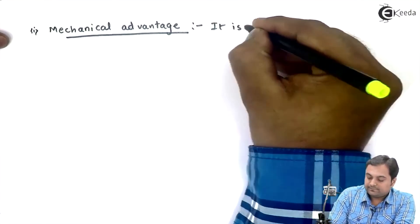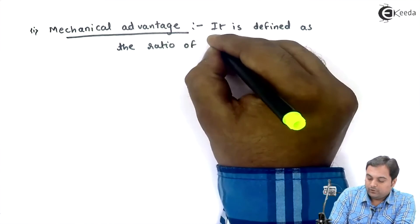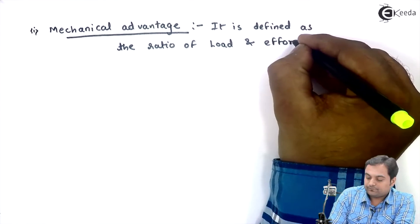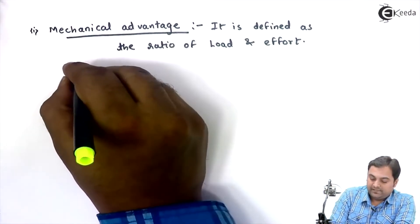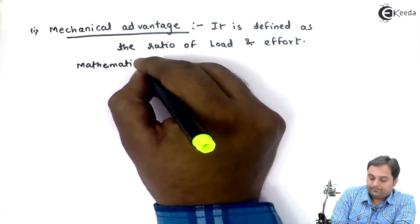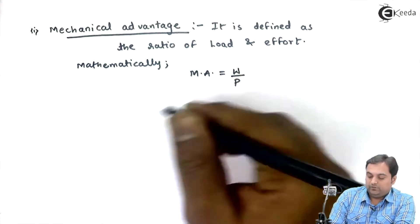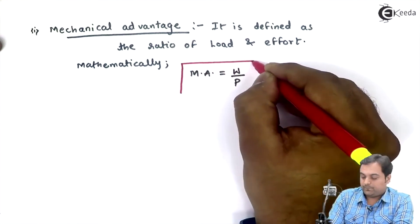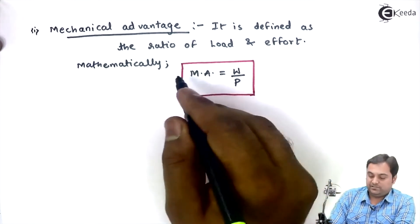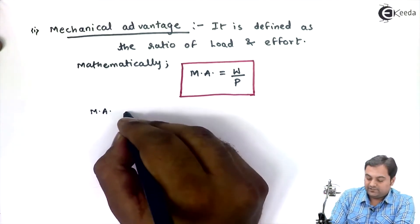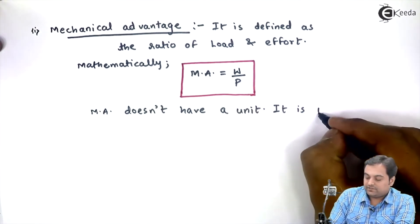Mechanical advantage is defined as the ratio of load and effort. Mathematically, the formula is given by MA — mechanical advantage, denoted by MA — is equal to W by P, that is load upon effort. Now load and effort both have the same unit, so their units get cancelled, and hence mechanical advantage does not have a unit.